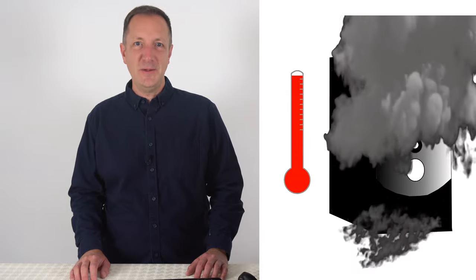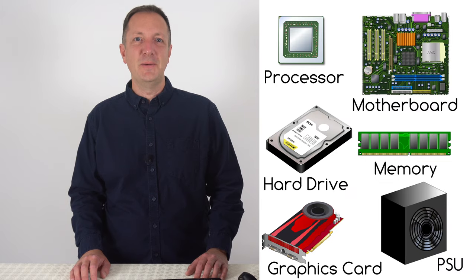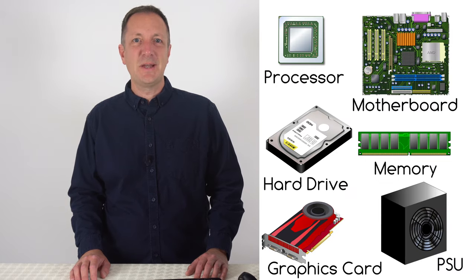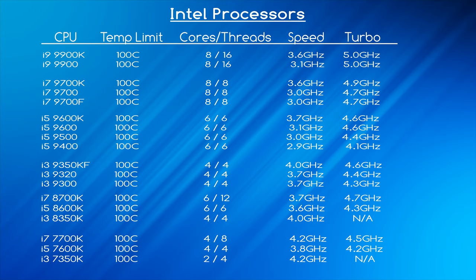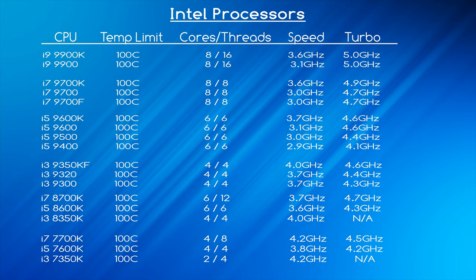Every computer has several components inside and each one of those components will have their own temperature limit. Let's start with the processor. Here are some of Intel's processors released in 2019 or earlier. Note that all of them shown here have a temperature limit of 100 degrees Celsius. It doesn't matter how many cores or threads they have or what speed they run at — they all have the same temperature limit.